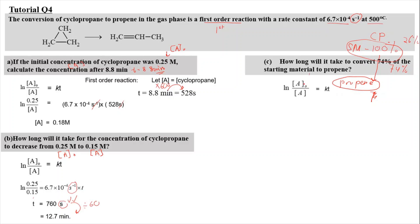Our starting value is 100 and after time T, the concentration of cyclopropane is 26%. K is the same as given. Once we do the math, we get T equal to 2010.6 seconds, or converting to minutes, that is 33.5 minutes.